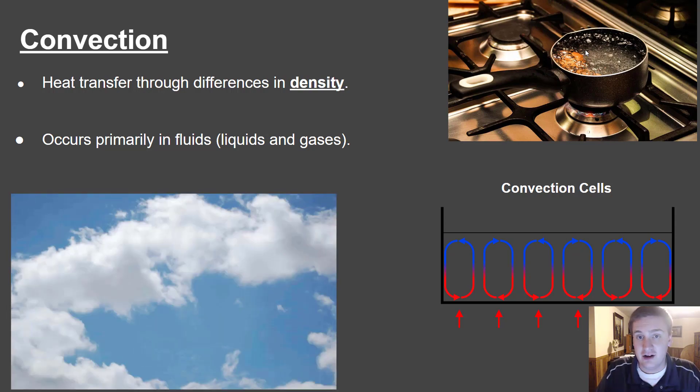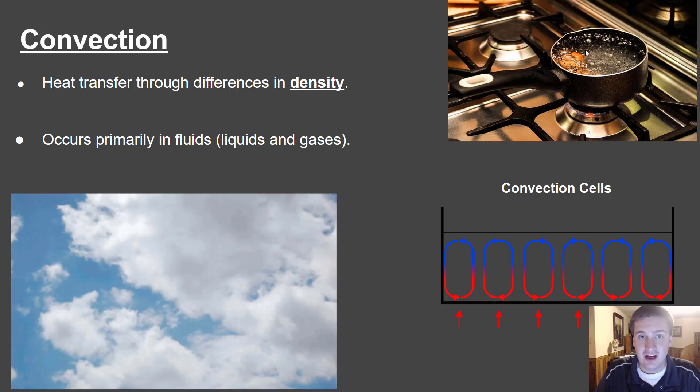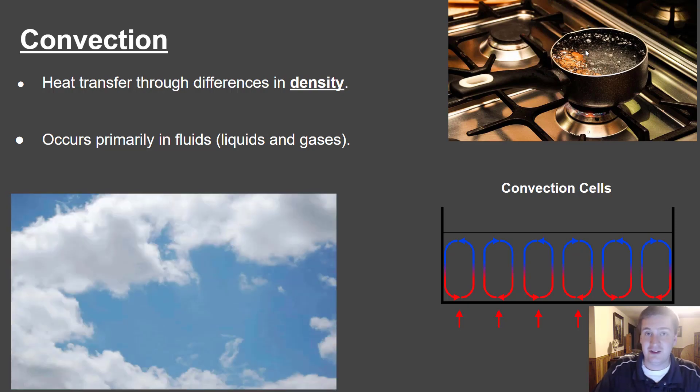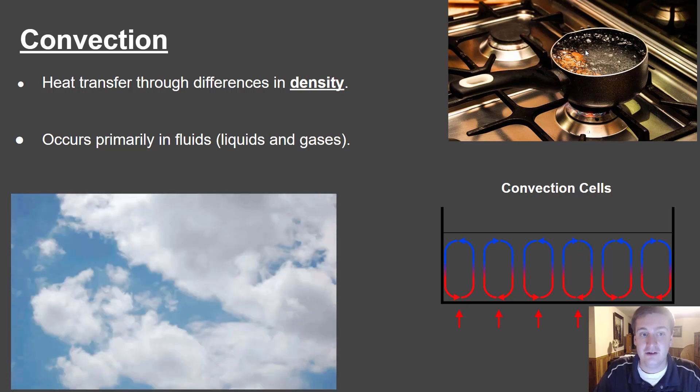Convection primarily occurs in fluids, such as liquids and gases. Convection occurs everywhere. It occurs in molten magma below our feet, in the oceans, and in the atmosphere. It's obviously going to be something that's going to be really important as we move on in Earth science.